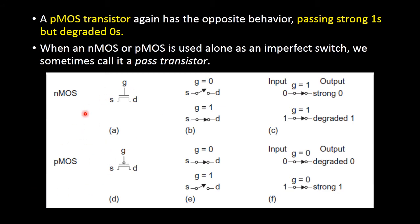Now let us see the operation. This is the symbol for NMOS transistor and this is the symbol for PMOS transistor. For NMOS transistor, to make it switch on, the gate G must be given the value 1. That is, if G is equal to 0, the NMOS transistor is in off state, and when G is equal to 1, the NMOS transistor is in on condition. First case: we switch on our NMOS transistor by giving G equal to 1. Now we are giving the input as 0, so at the output you will be getting a strong 0 — that means the correct 0 you will be getting at the output.